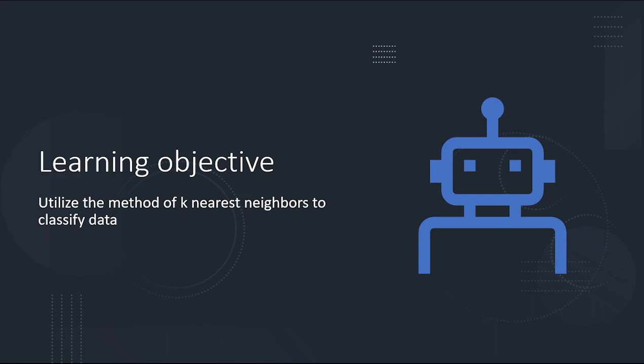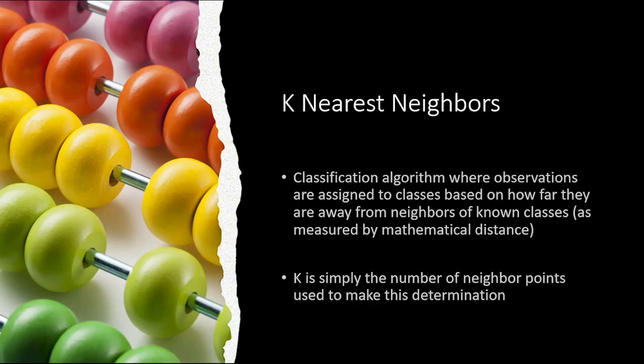K-nearest neighbors is a classification method — don't confuse this with cluster analysis, despite it being plotted somewhat like one. K-nearest neighbors is a classification algorithm where observations are assigned to classes based on how far they are from their neighbors. The neighbors have known classes, and the points you're trying to classify don't. Mathematical distance is measured and things are classified based on where they are closest to according to distance metrics.